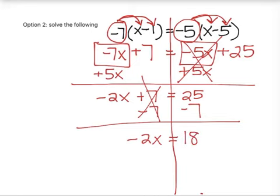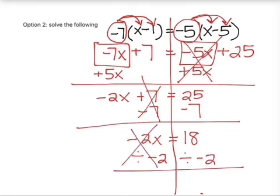My last step to get x by itself is to divide by the number that is attached to the x. So I will be dividing by a negative 2. Make sure you divide by a negative. That is the number that is there. So my x will equal 18 divided by negative 2, which is negative 9.